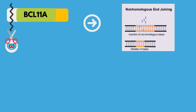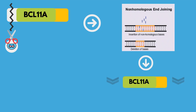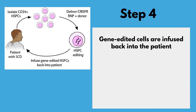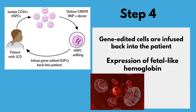Basically, this pathway will repair the cut by adding or removing nucleotides, which can in turn disrupt the BCL11A gene's function. As a result, this will remove the suppression of the gamma globin gene. Lastly, the gene-edited cells are then infused back into the patient, which will later differentiate into mature blood cells that contain the fully functional fetal hemoglobin.